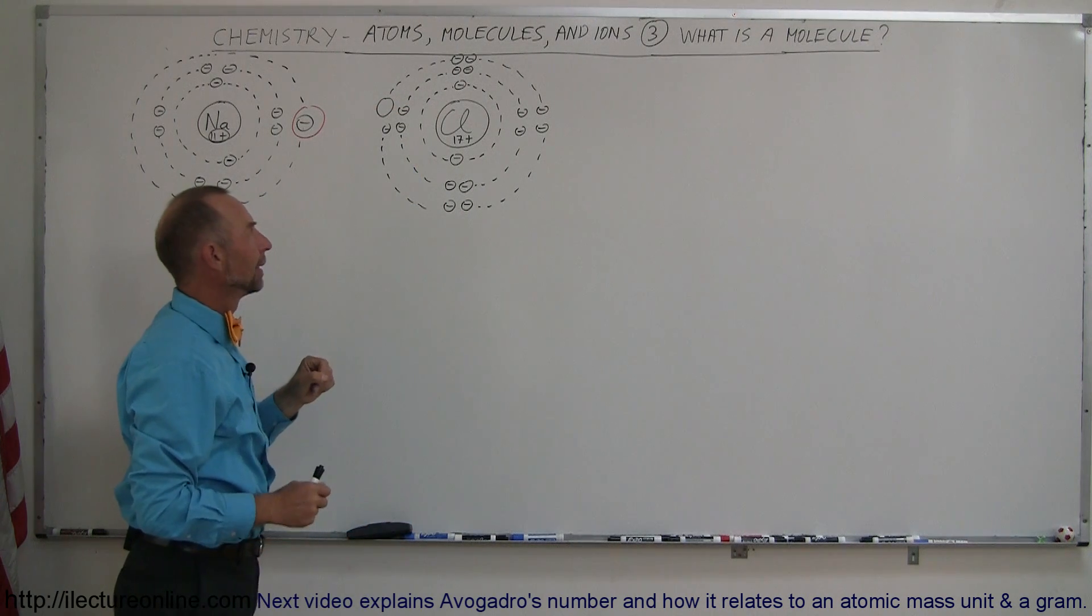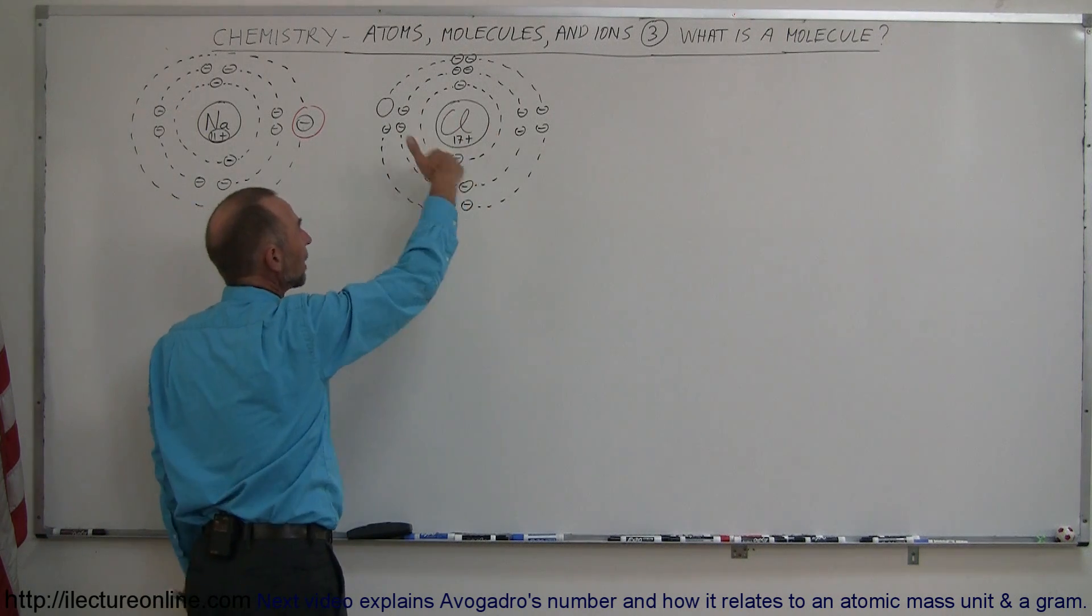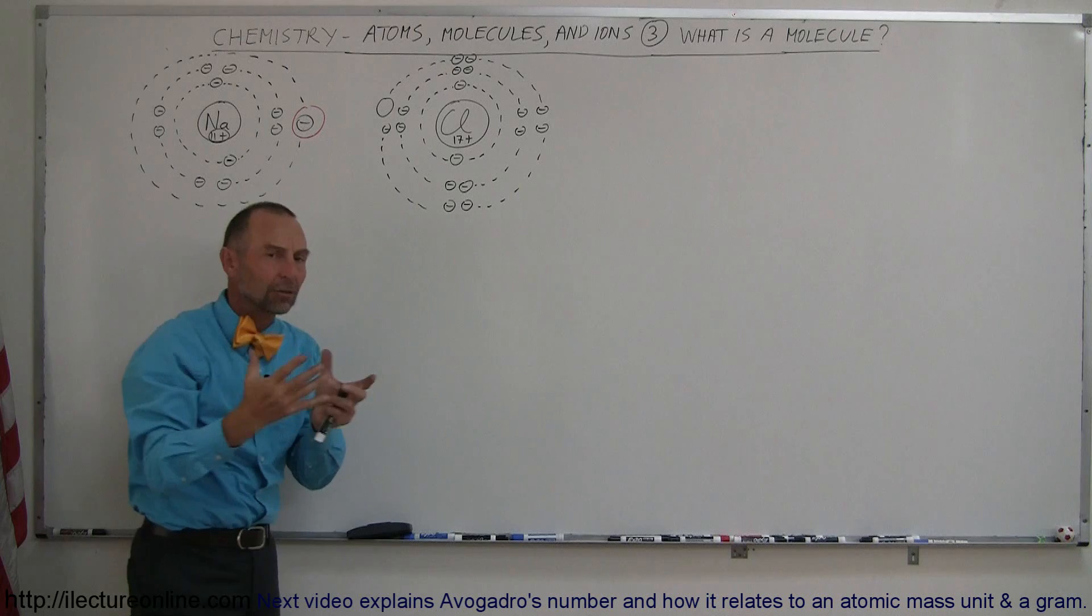It wants to have one more. Now, you say, well, why does it? Because it has 17 protons, 17 electrons, it's neutral, electrically neutral, it's balanced.